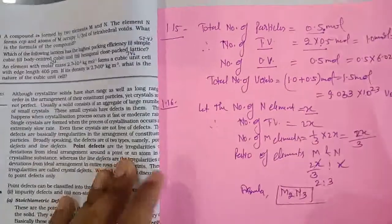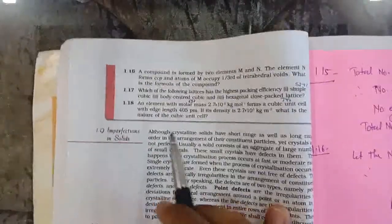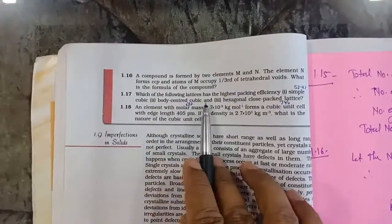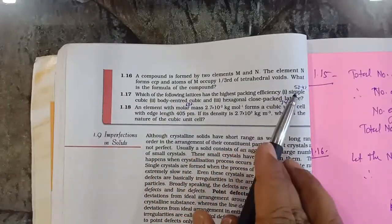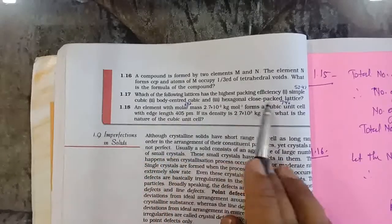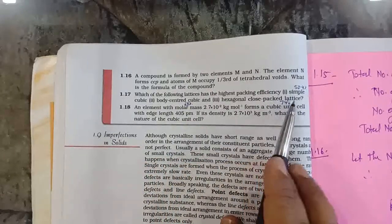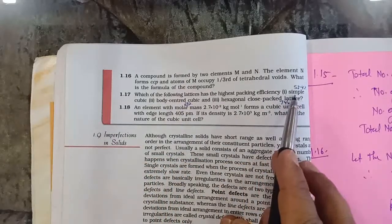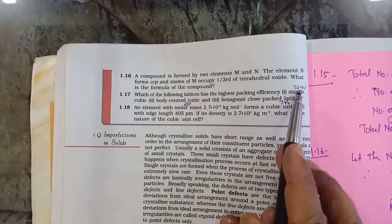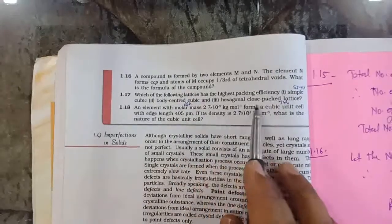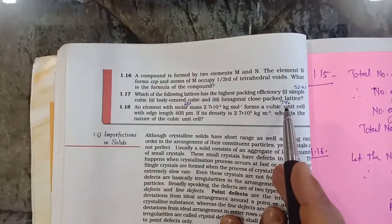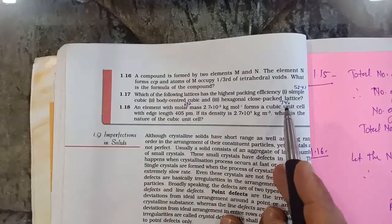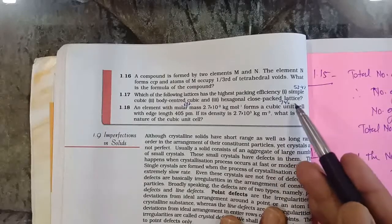Question 1.17 — which of the following lattices has the highest packing efficiency: simple cubic, body centered, or hexagonal close-packed lattice? Simple cubic has 52.4%, body centered cubic has 68%, and hexagonal close-packed lattice has 74%. The answer is obviously hexagonal close-packed at 74%.